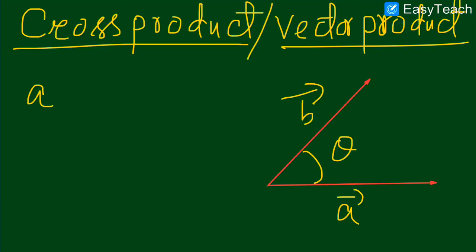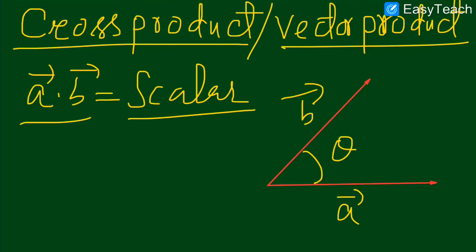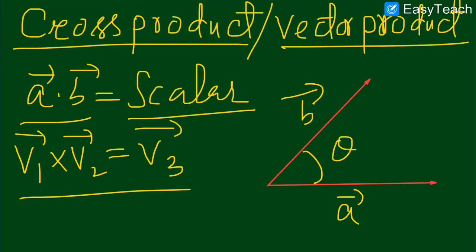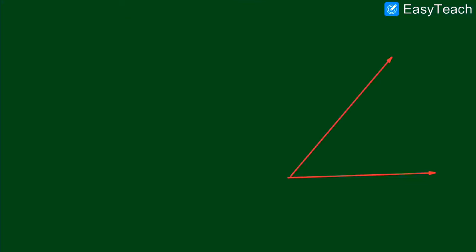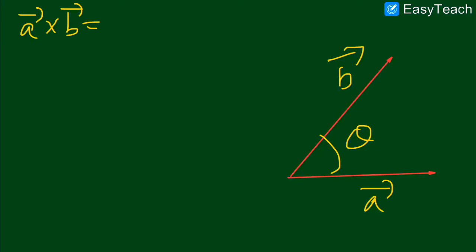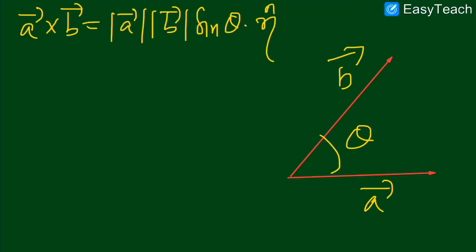First of all you must know — jab hum pehle class mein parhaa tha ke A dot B, that is the dot product of two vectors, that comes out to be equal to a scalar, is liye is dot product ko hum scalar product kehte hain. Lekin yahan pe jab hum do vectors ka cross product nikalte hain, that comes out to be equal to a vector, is liye is cross product ko hum vector product kehte hain. Cross product is denoted by A cross B and it is defined as magnitude of A, magnitude of B, into sine of theta, into n̂.